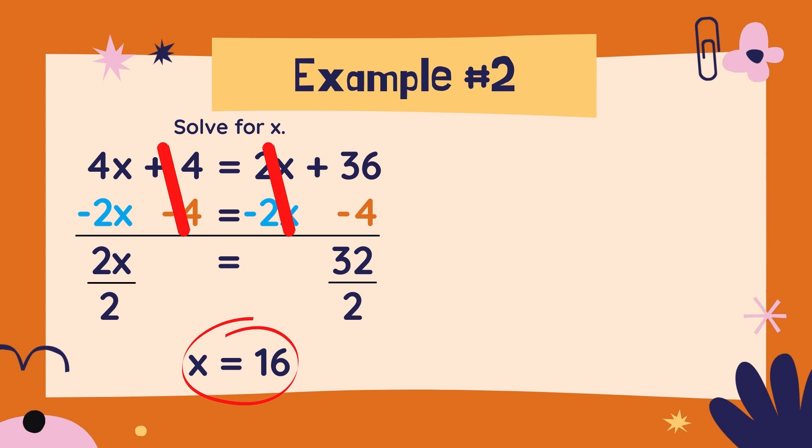One step on each line of my problem solving. But on this example, I did two steps in one. You can choose which way you want to do it, but if this looks too confusing to you, it's definitely okay to do only one step at a time, like I did in example one.